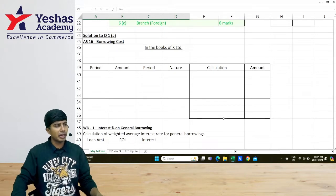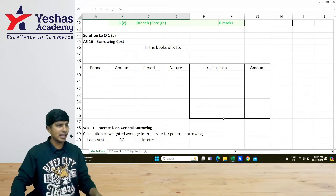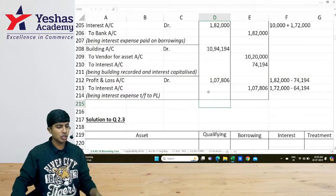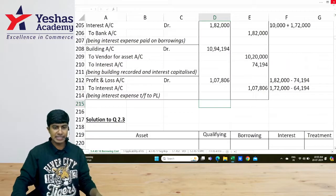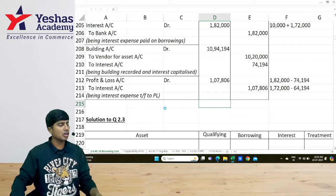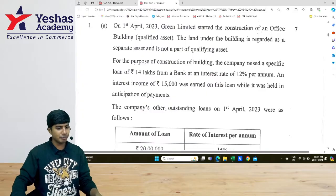Let us now discuss question number 1A from our May 2024 examination paper. This question is on accounting standard 16 which talks about borrowing cost.